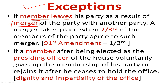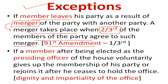Regarding the merger exception: a merger is valid only when two-thirds of the members of the party agree that yes, the merger is possible. The two-thirds requirement was introduced by the 91st Amendment. Previously, the provision was that if one-third of members left, it would count as a split and not defection — so if there were three members and one left, it would be counted. The two-thirds requirement was raised to give greater security to the law.